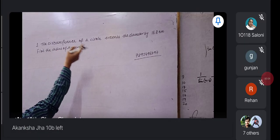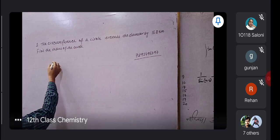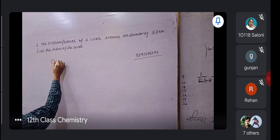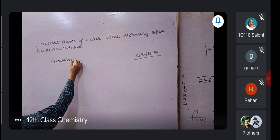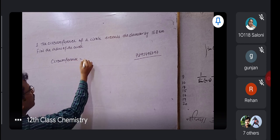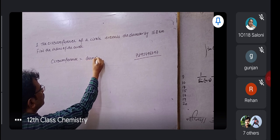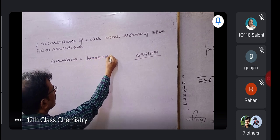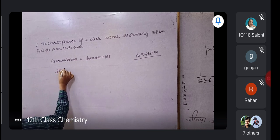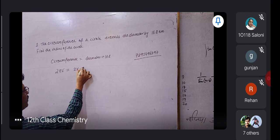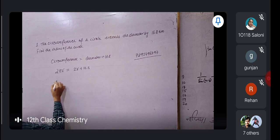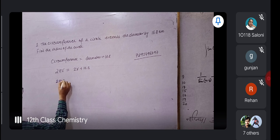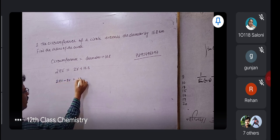The circumference of a circle exceeds the diameter by 16.8 on the radius of the circle. So the circumference of the circle is 16.8 on the radius. In this circle, we have 2 pi r minus 2 r equals 16.8.